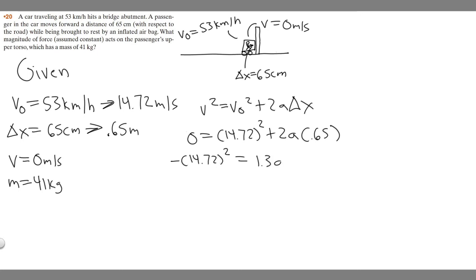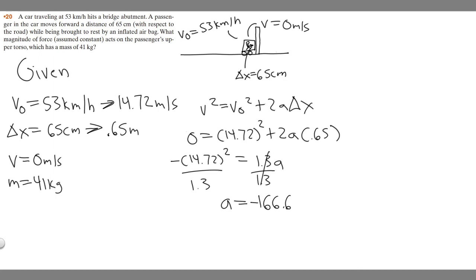To solve for a, we divide both sides by 1.3. So a is going to be equal to negative 14.72 squared over 1.3. Notice how a is negative because we're decelerating. If you plug that in, you get a equals negative 166.675 meters per second squared.